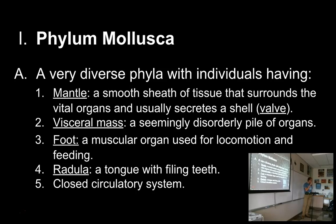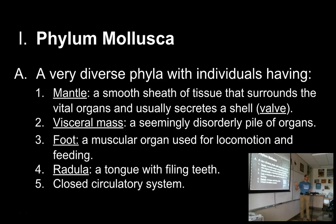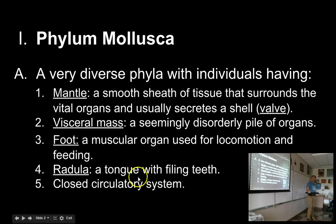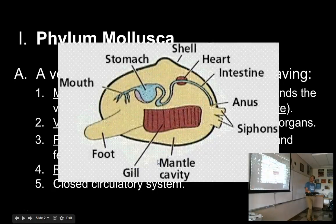All mollusks have a tongue with a filing tooth. The tongue is like a file, and when a snail eats, it opens its mouth and out comes this filing tongue that lifts pieces of food off of what it wants to eat. That's called the radula. Like the annelids, mollusks all have a closed circulatory system, so they'll have a heart, arteries, and veins.